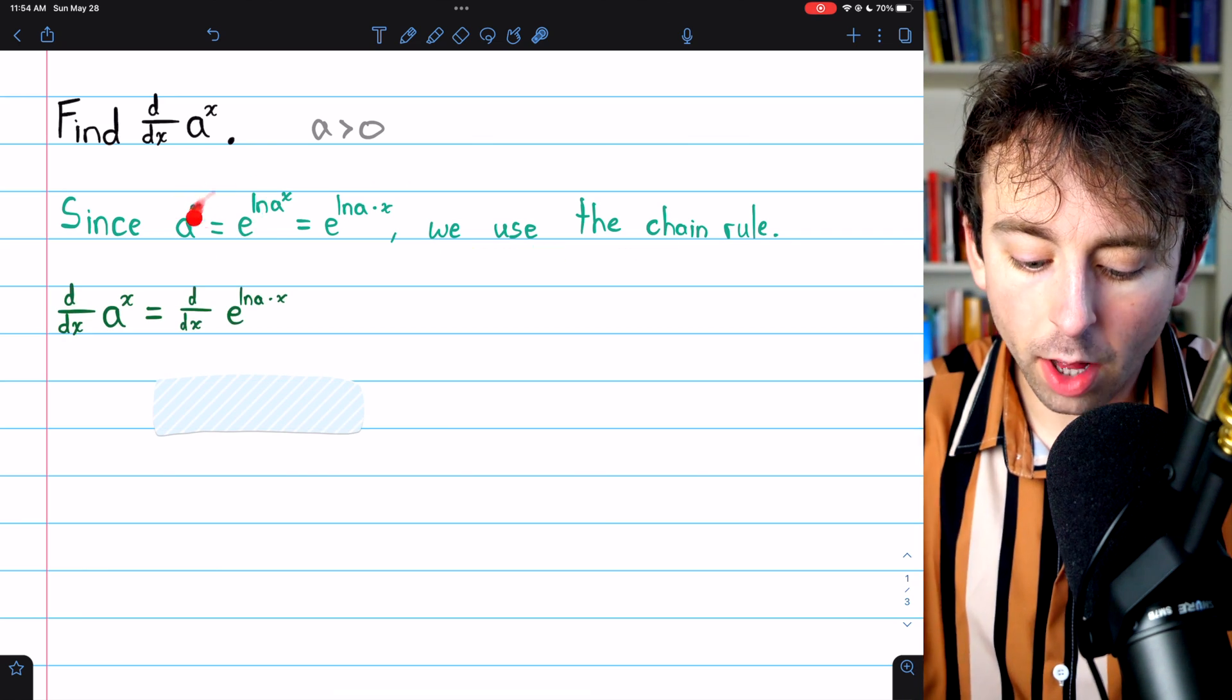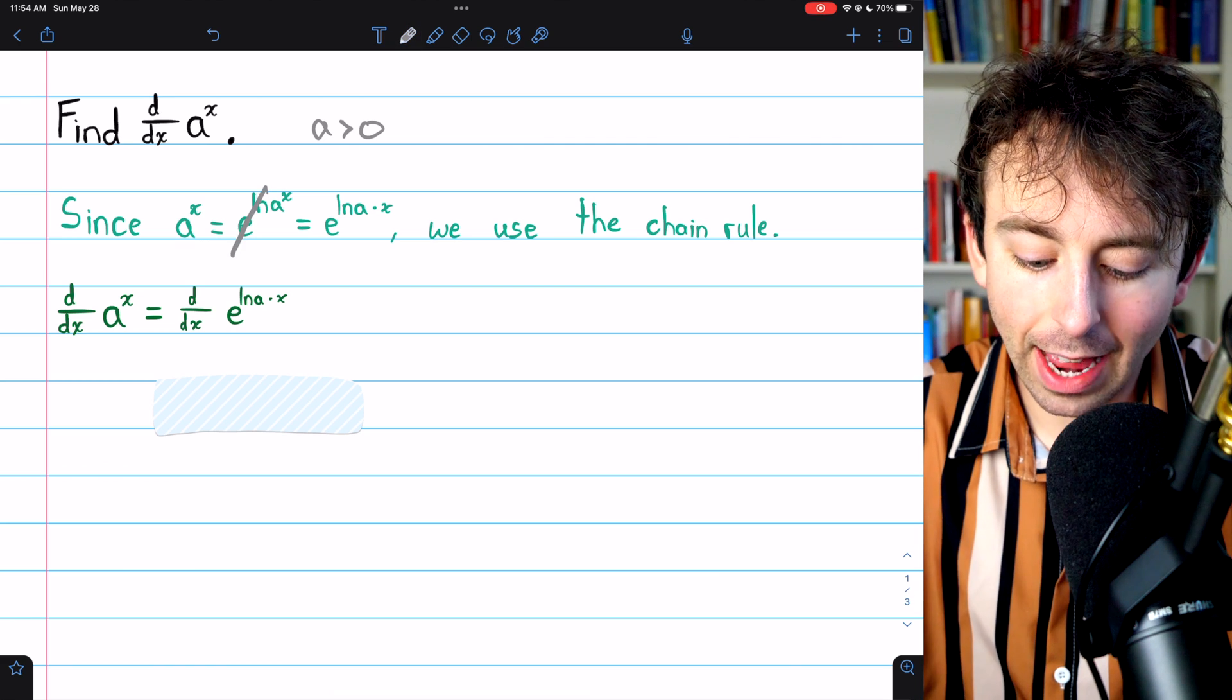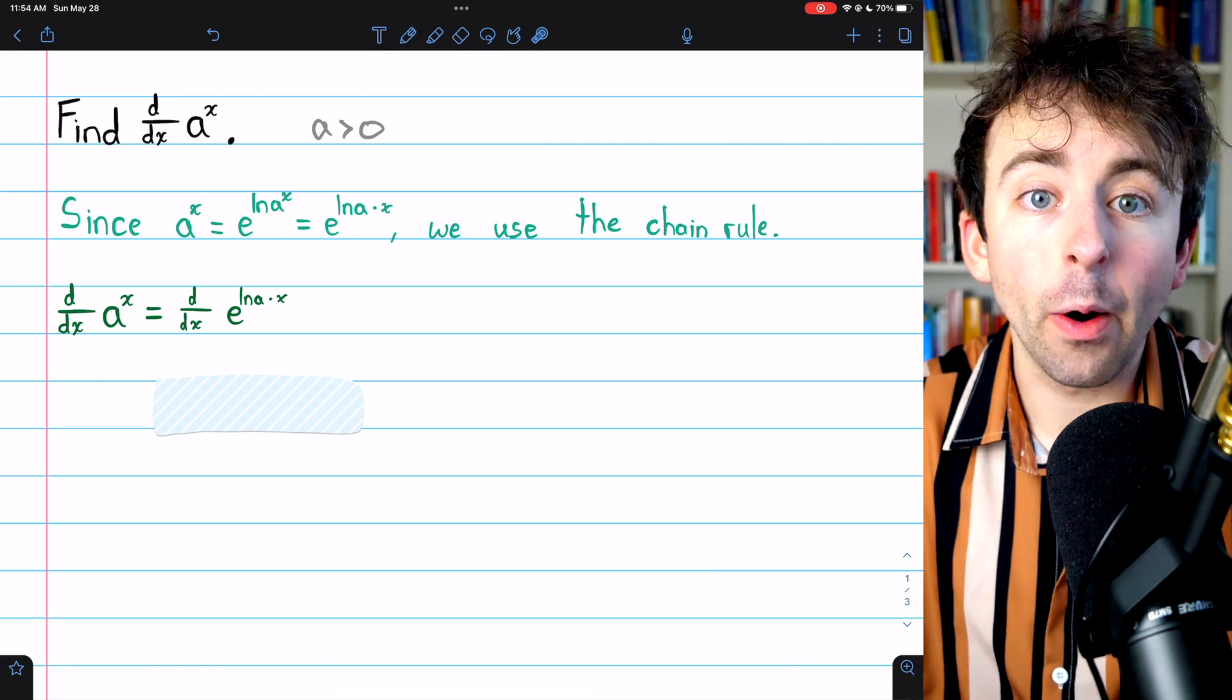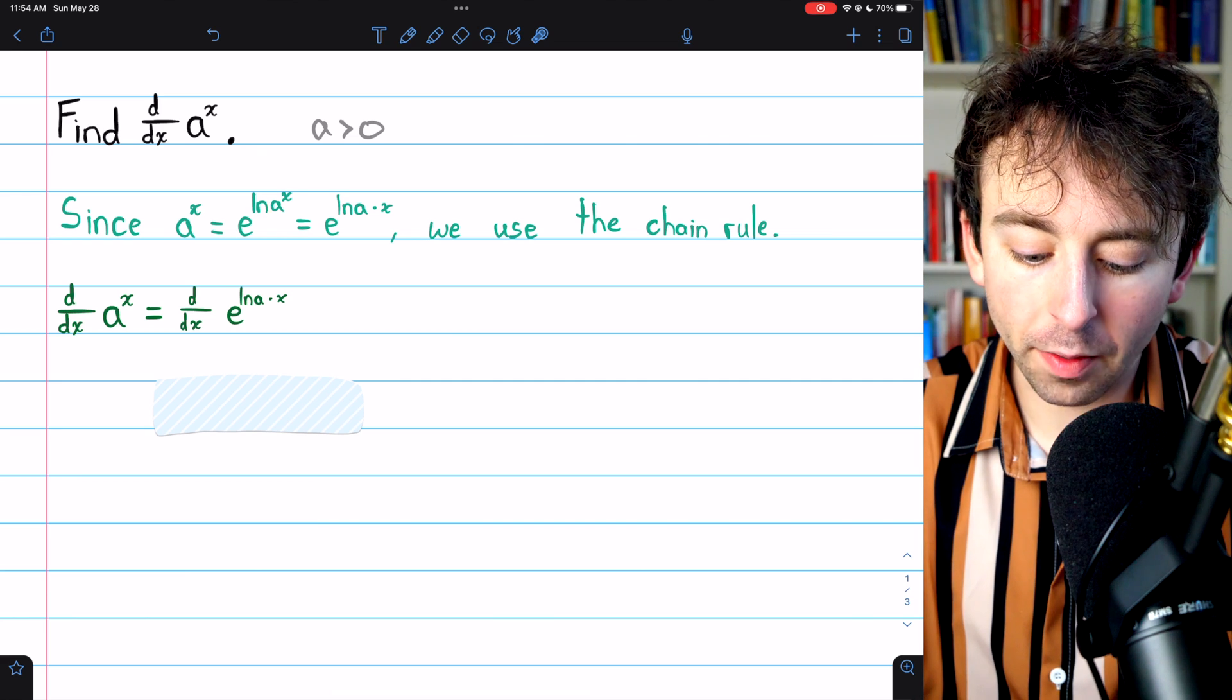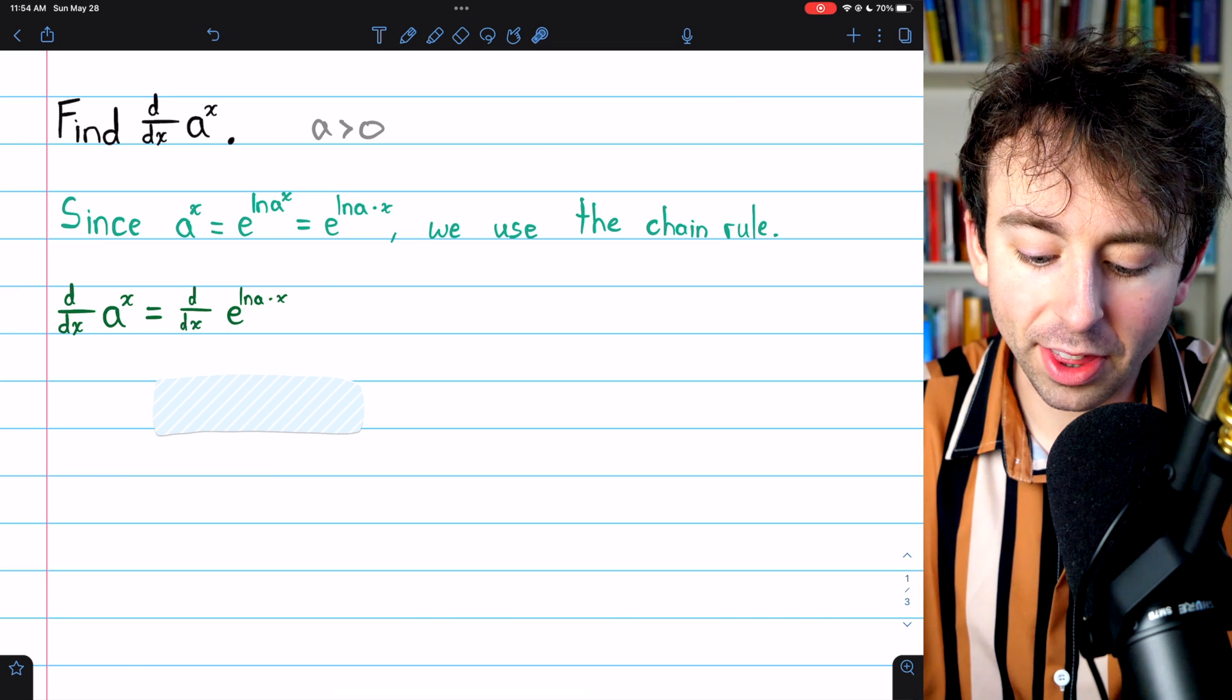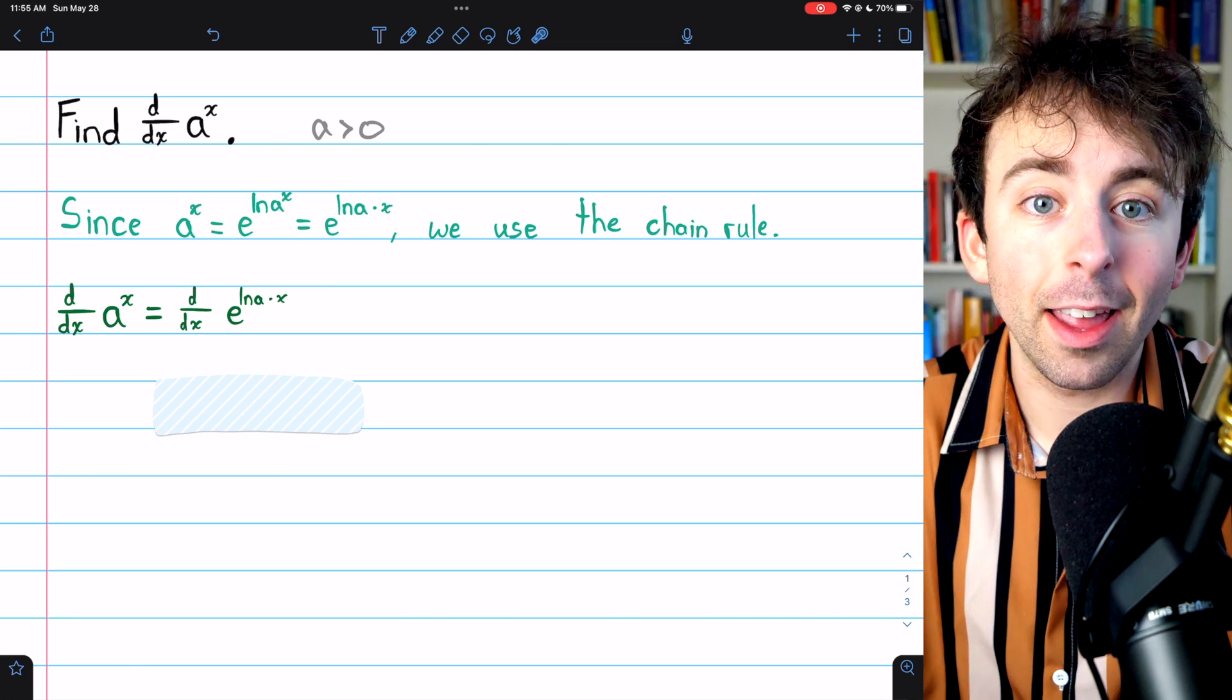Once more, this first equality is true because e and ln are inverses. And then the second equality is true by our log rules. The log of something to a power is the same as that log with the power taken out as a factor.